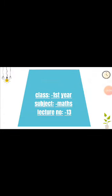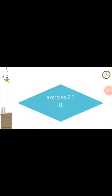Bismillahirrahmanirrahim. Class first year, subject maths, lecture number 13. In this lecture we discuss exercise 2.2, question number two, which is: show A minus B and B minus A by Venn diagram. The first part is A and B are overlapping sets, the second part is A is a subset of B.